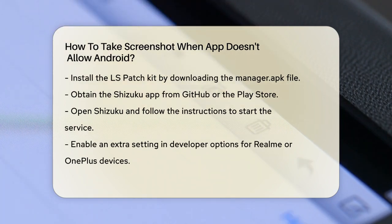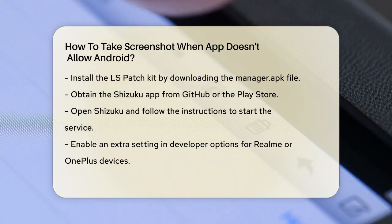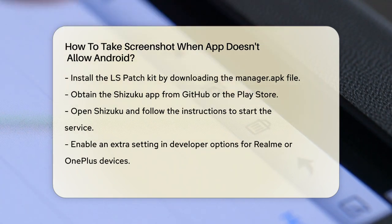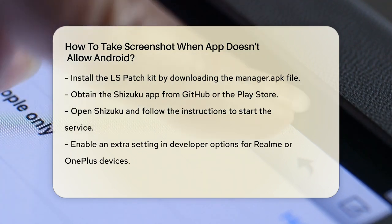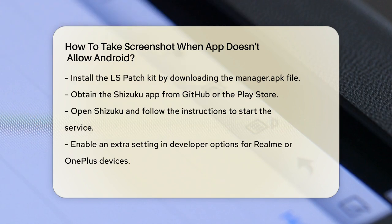Once you have these apps, open Shizuku and follow the instructions to start the service. You might need to enable an extra setting in your developer options, especially if you're using a Realme or OnePlus device running ColorOS.